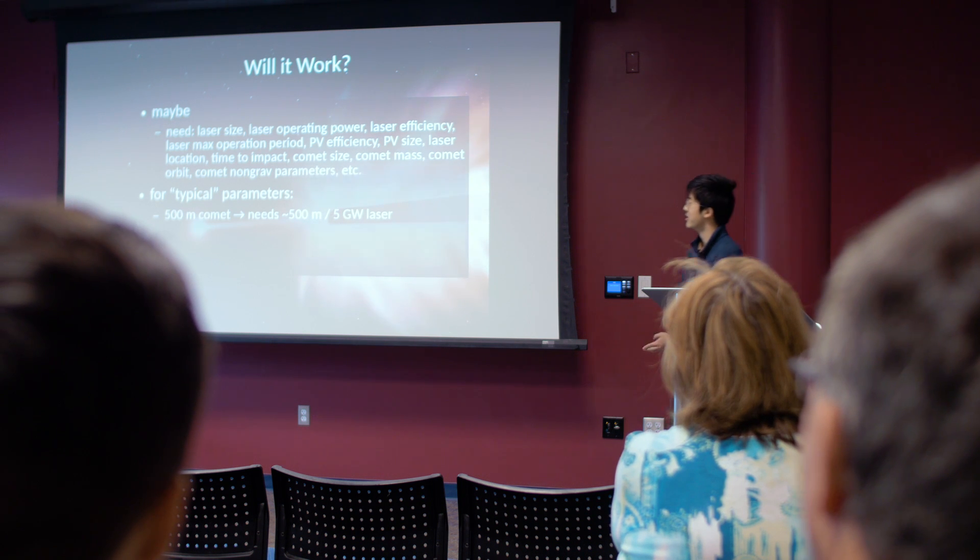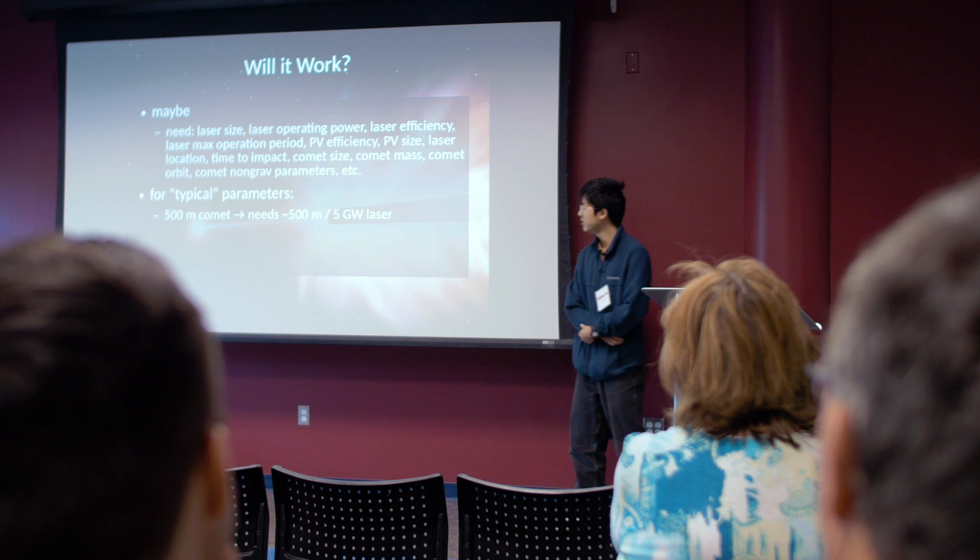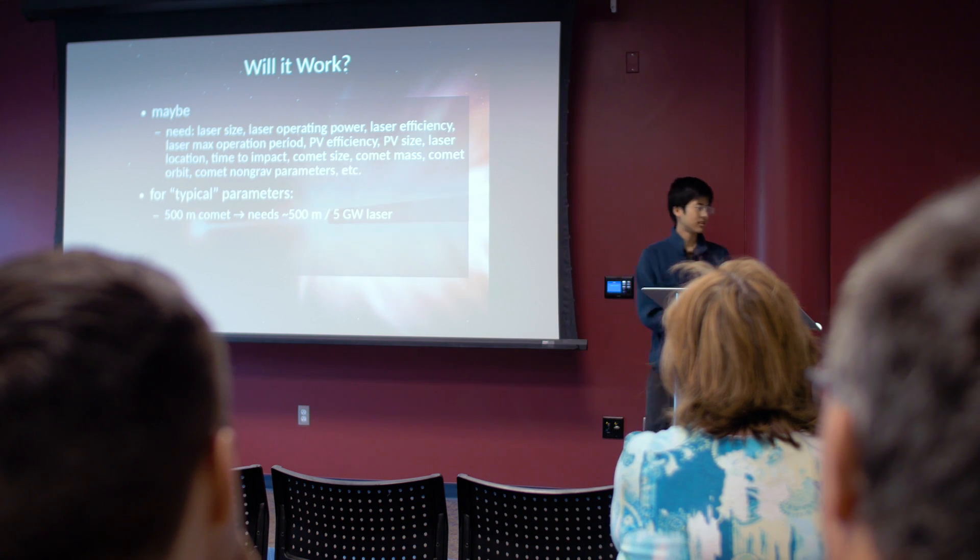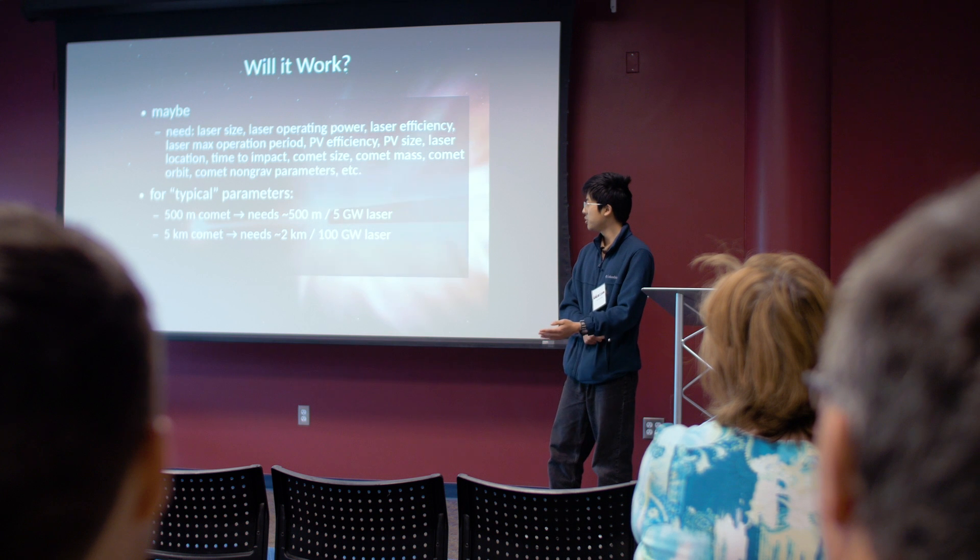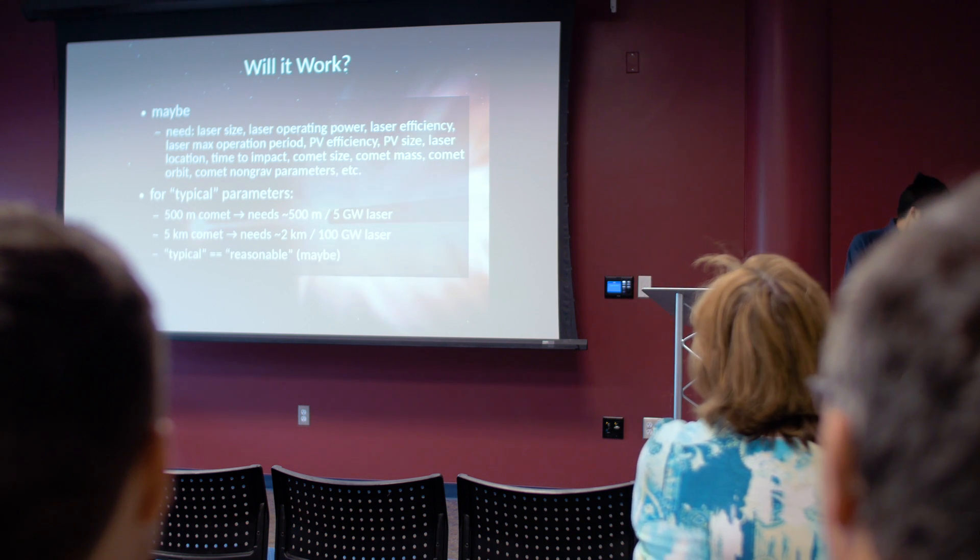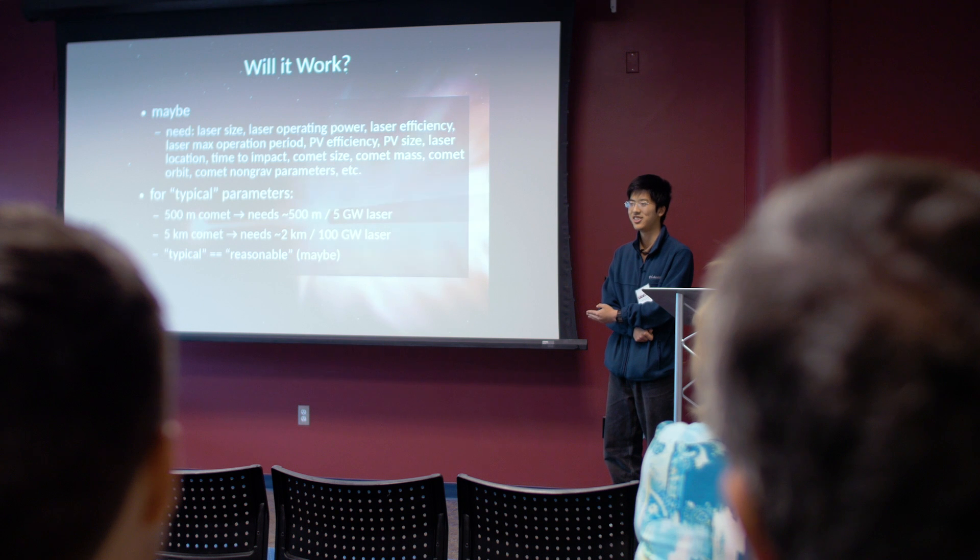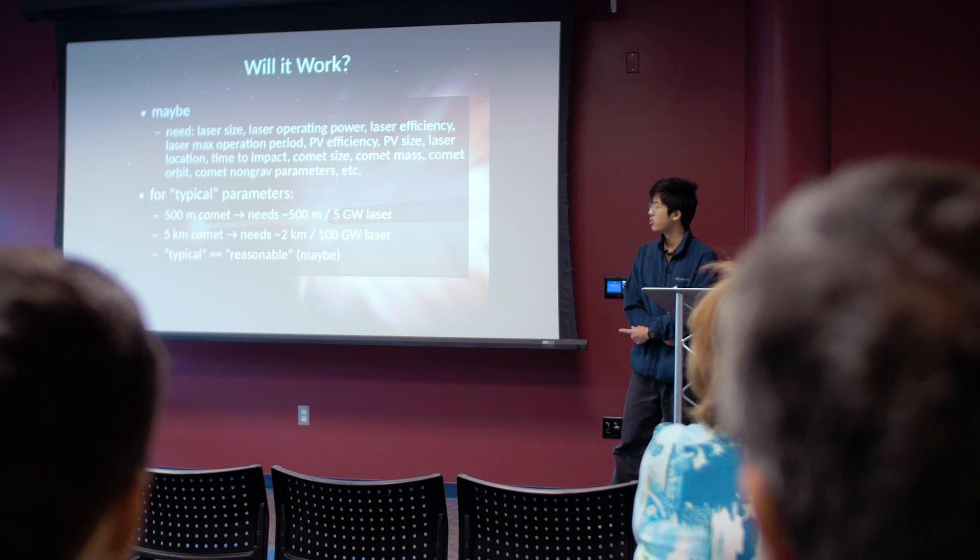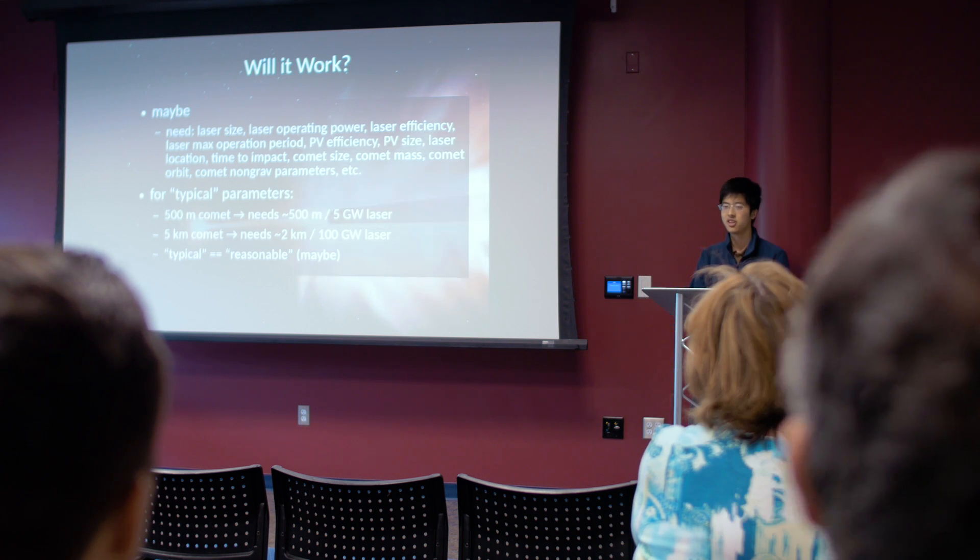And for some typical parameters, you might consider a 500-meter comet. I showed you Comet Siding Springs before, the one that passed by Mars. That was a 500-meter comet. And you'll need a laser of on the order of about 500 meters, and powered at 5 gigawatts. Or if you have a 5-kilometer comet, this is the kind that killed the dinosaurs, you'll need about a 2-kilometer laser array, or operating at 100 gigawatts. And so typical in this case means reasonable. I mean, obviously we don't have a typical 2-kilometer laser, because we haven't built that yet. So I basically just adjusted these parameters in such a way that they're consistent with current technology and maybe its projected increased improvements in current technology into the future.